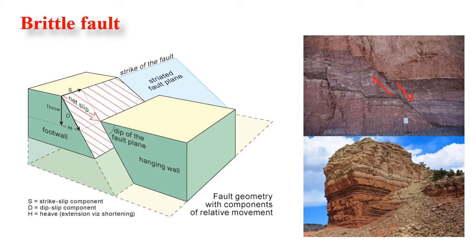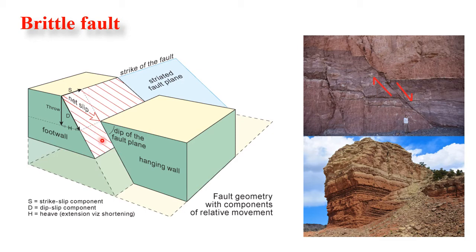In general usage, a fault refers to a brittle fault unless a ductile fault or shear zone is specifically mentioned. A brittle fault is a discrete fracture between two blocks that have been displaced relative to each other in a direction parallel to the fracture plane. Apart from a fault plane, we also have a fault zone — a region containing several parallel or anastomosing faults. Any fault-bounded sliver within the fault zone is known as a horse.